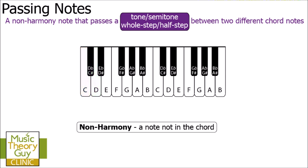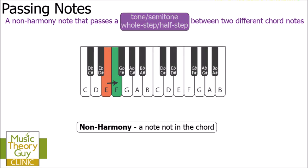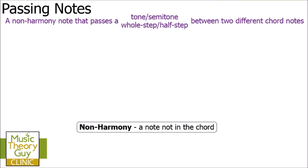Here's the E on my keyboard and F is directly next to the E because there's no black note between them. Because they are the closest possible distance on the keyboard, we also say that is a semitone. If you need more help with semitones, go and have a look at my video on accidentals and semitones where it goes into much more detail.